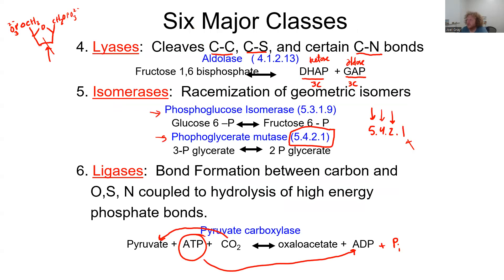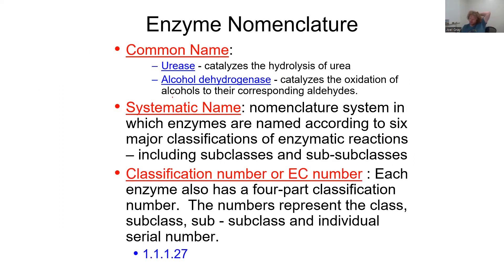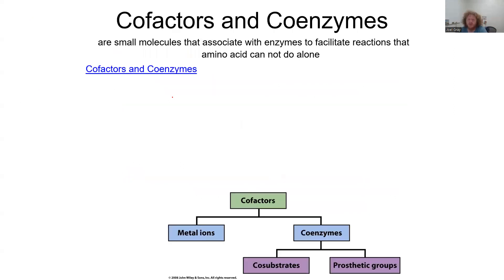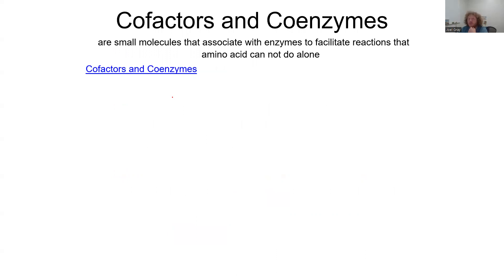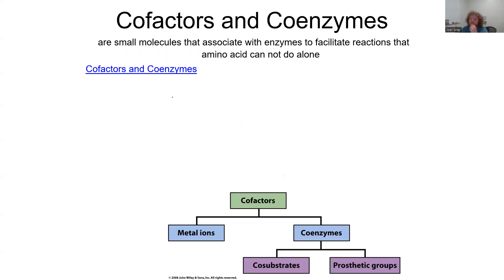Someone might use a general term like 'isomerase' or give a more detailed name like 'phosphoglucose isomerase.' Ultimately, these are things you figure out within the field. Knowing the six major enzyme classes is valuable, but memorizing specific sub-subclass numbers is a bit extraneous unless you're deep within that field.